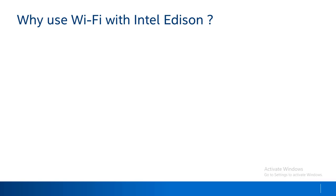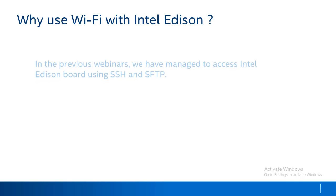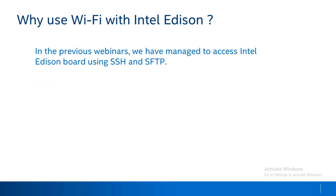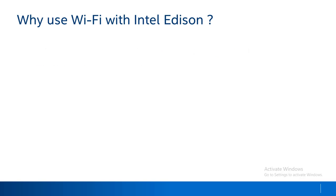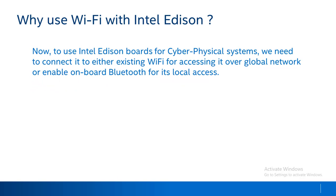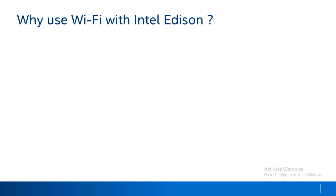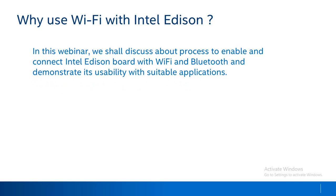Why use Wi-Fi with Intel Edition? In previous webinars we learned about accessing Intel Edition boards over SSH and SFTP. Moving further, if we want to use Intel Edition board for cyber-physical systems or Internet of Things, we must hook it to either a Wi-Fi network for global access or enable the built-in Bluetooth module to connect devices over a local network.